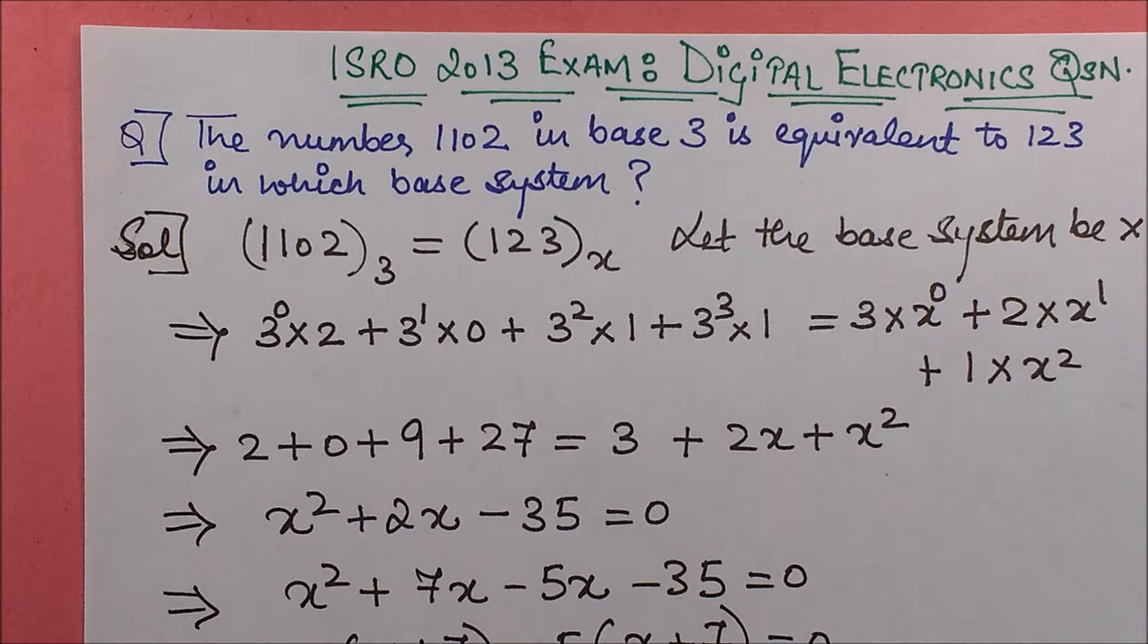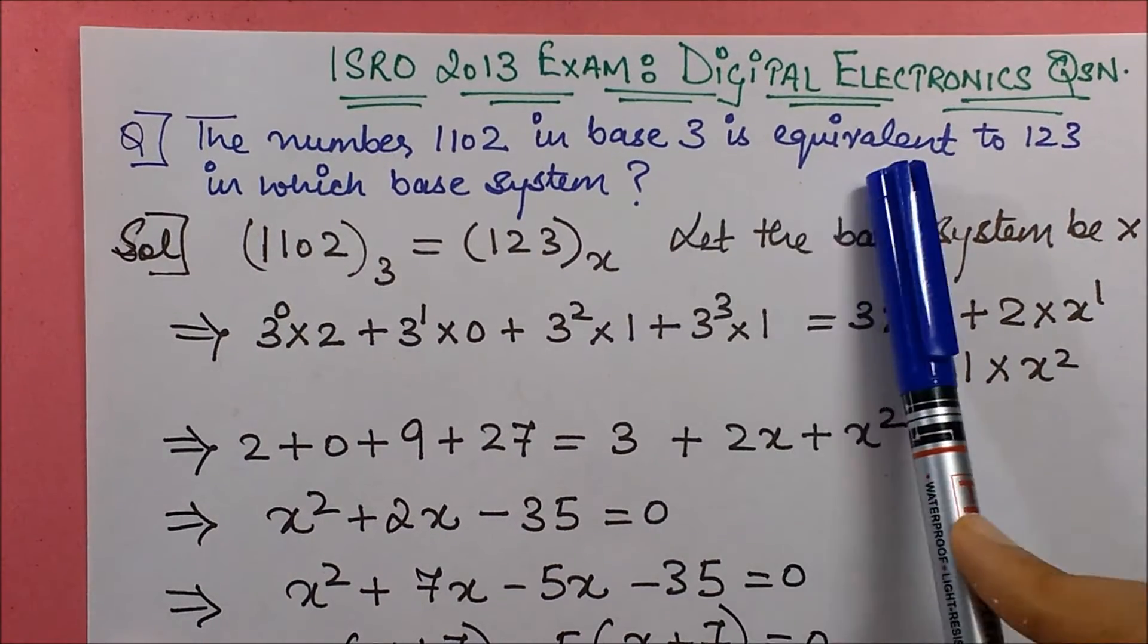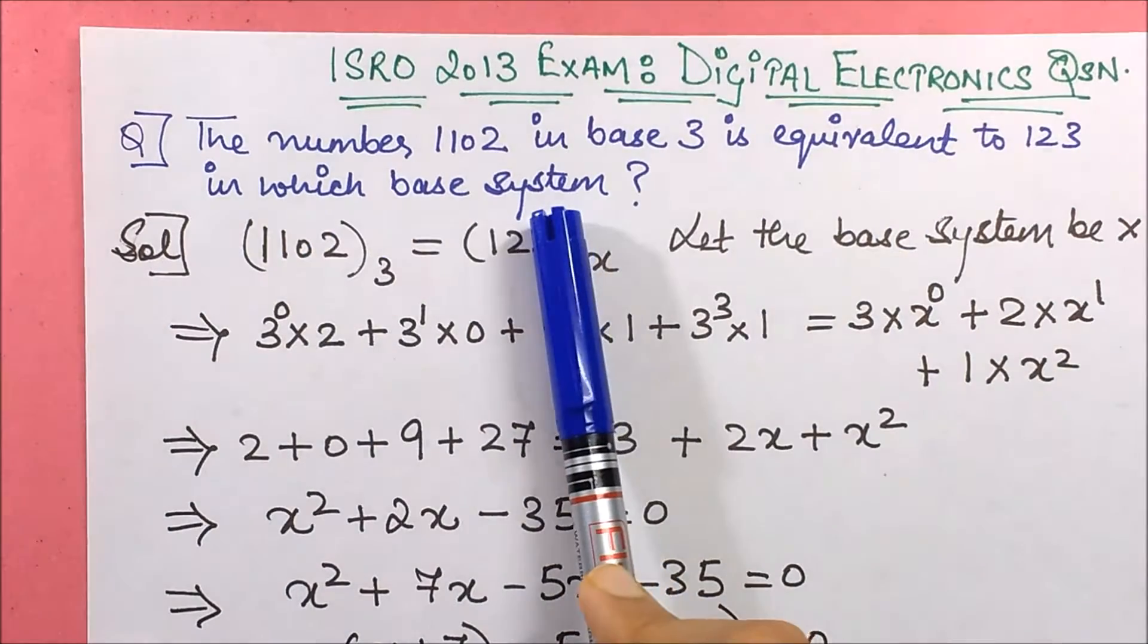Hello friends, here I am with another question from ISRO 2013. This one is from Digital Electronics. Very simple one. It says that the number 1102 in base 3 is equivalent to 123 in which base system.